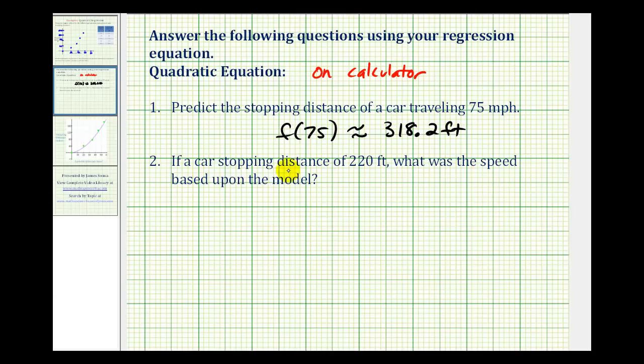The next question is, if a stopping distance is 220 feet, what was the speed based upon the model? So in this case, they're asking us, what would x be if we know the stopping distance was 220 feet? So in the first example, we were determining the y value. And for number two, we're given the y value. We want to determine the x value.